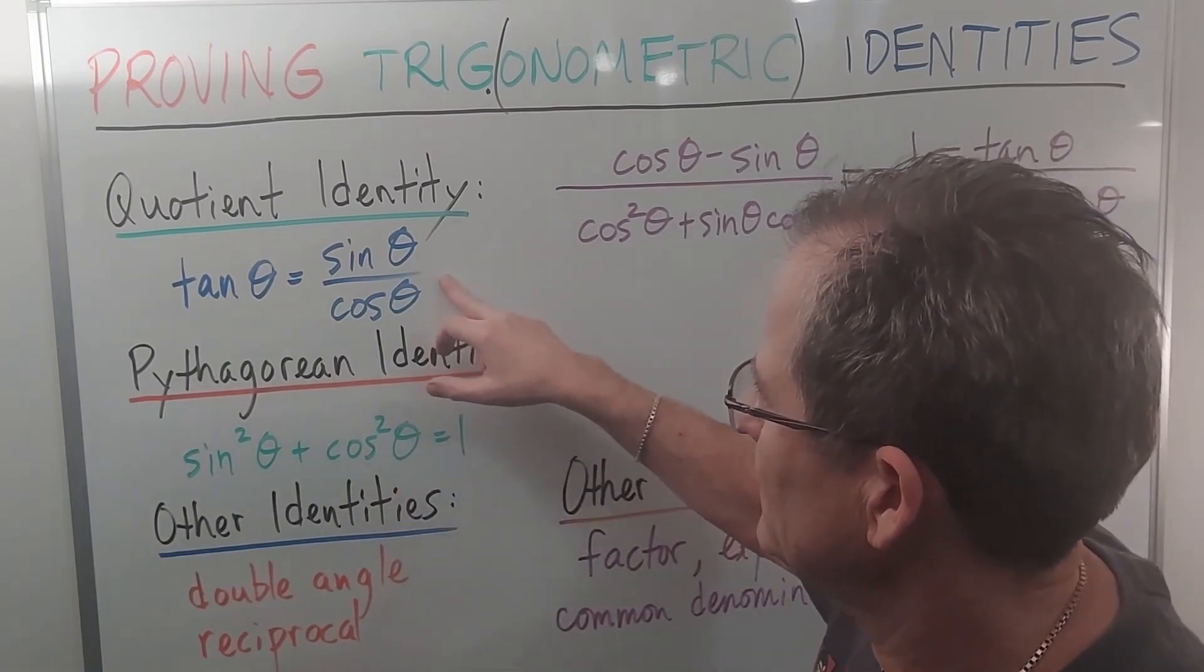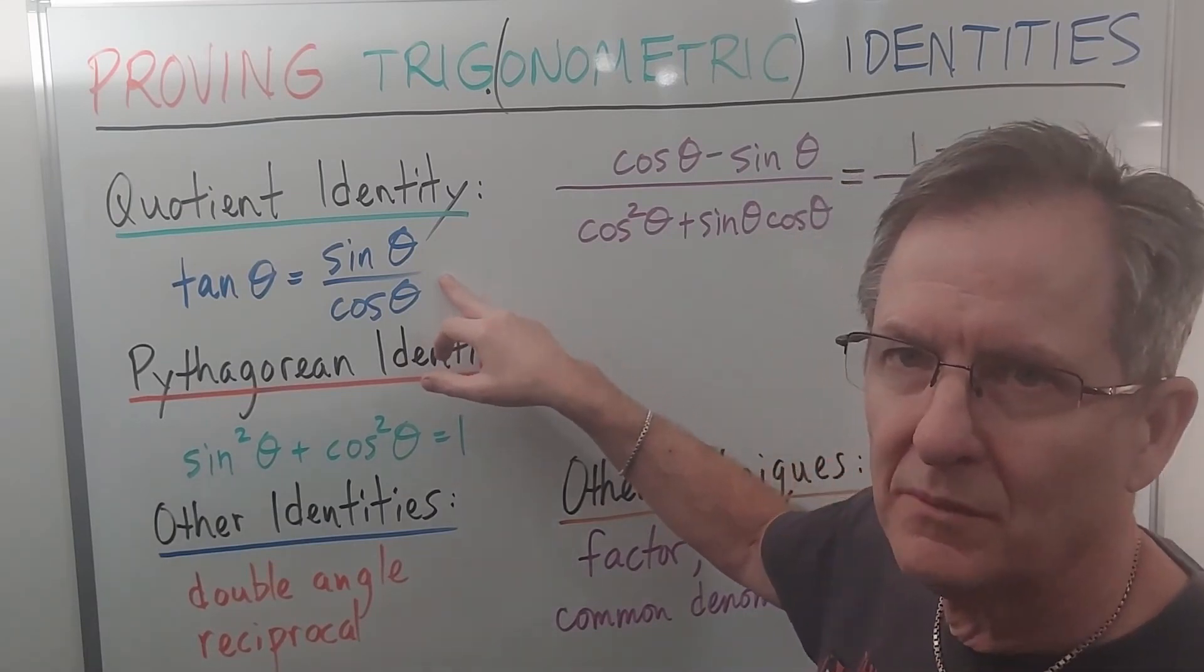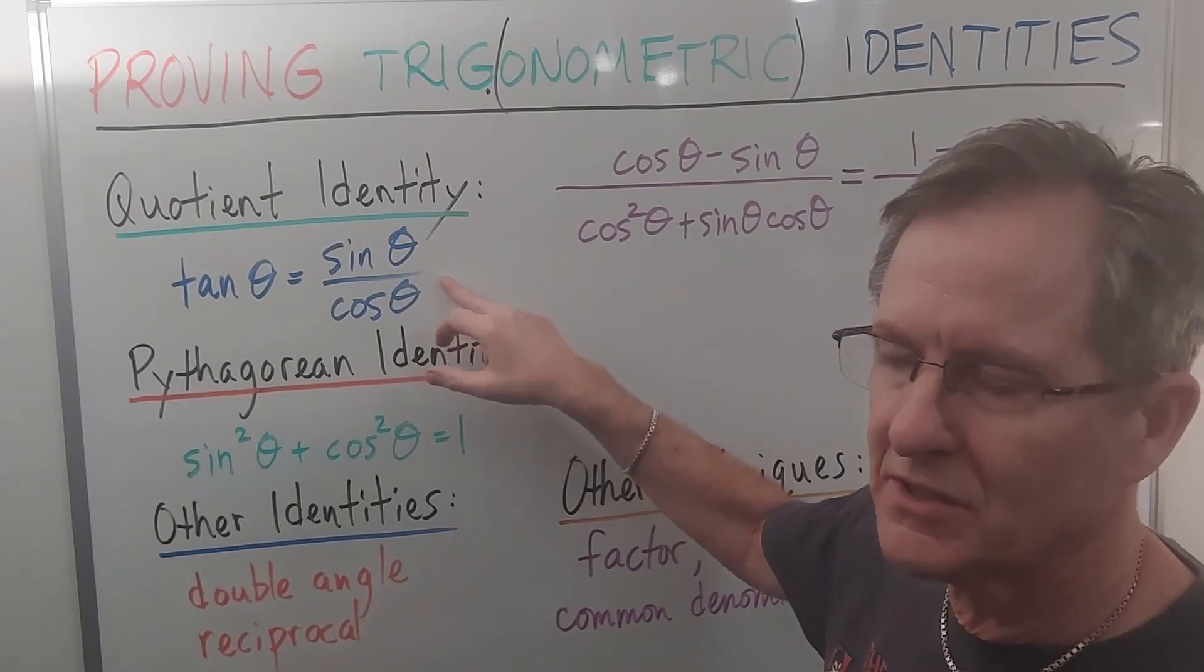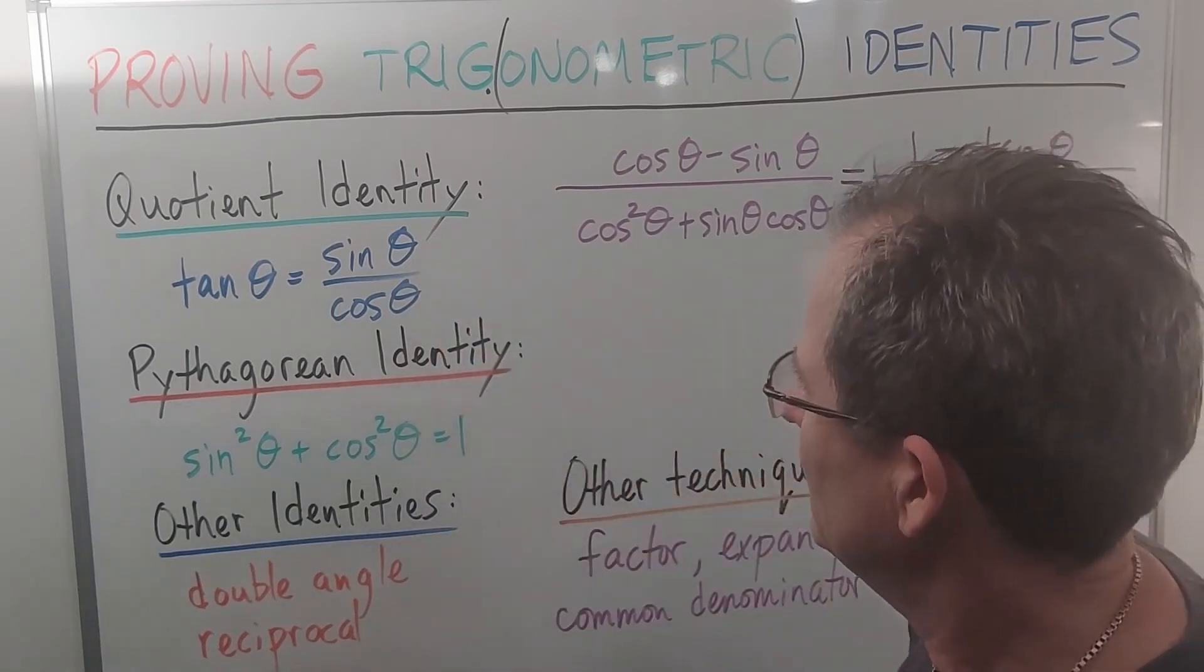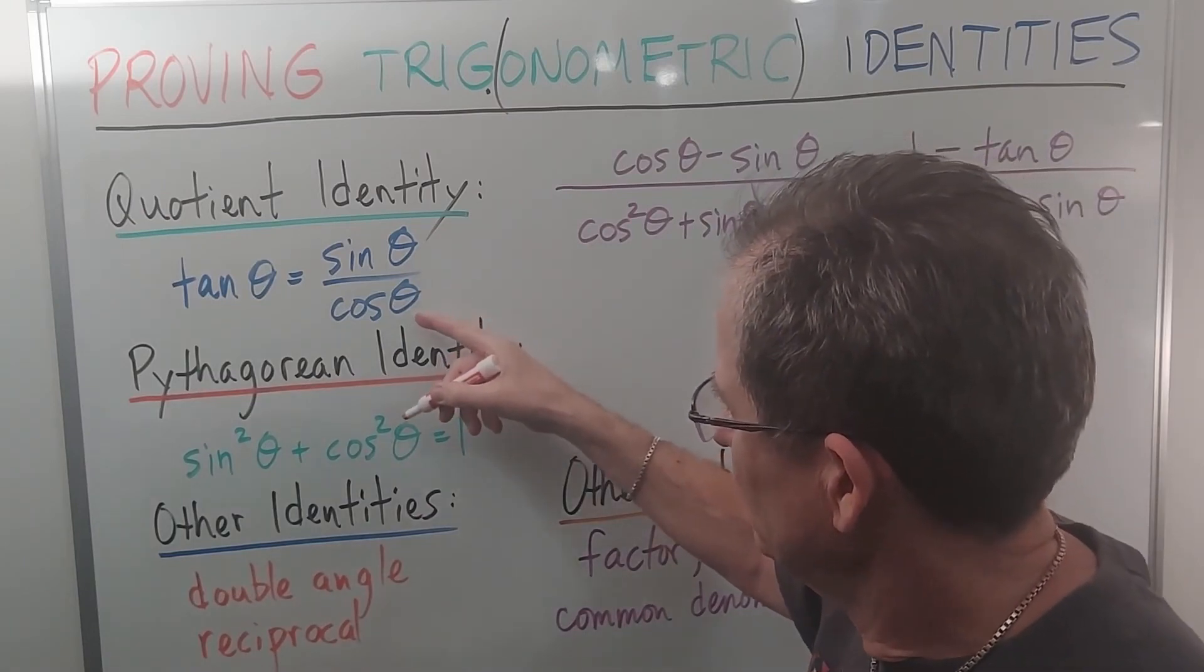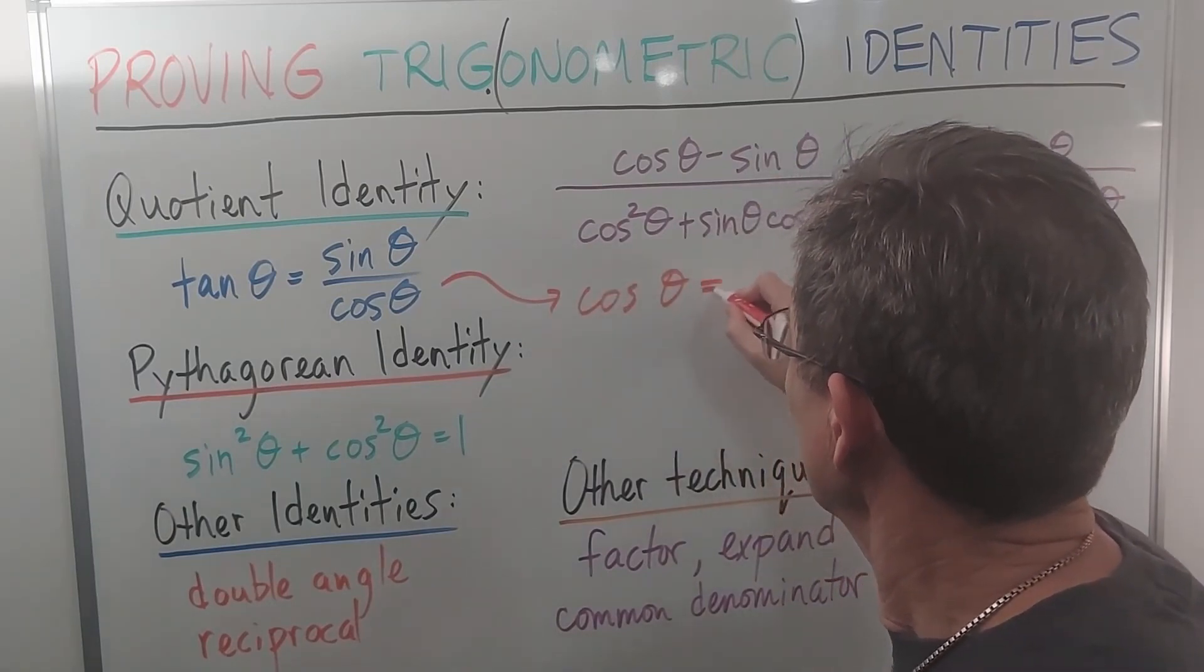When we have an identity like tan θ equals sin θ over cos θ, the restrictions are normally not mentioned, but we assume that the restrictions are understood. So for example, in this particular identity, you can't divide by zero, so cos θ cannot be zero.